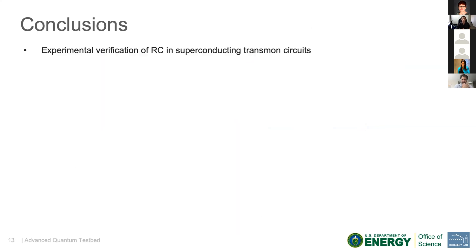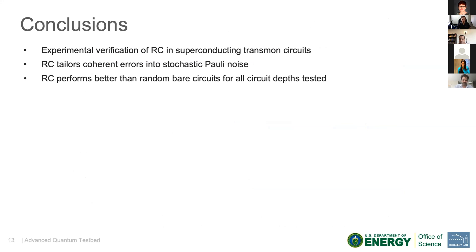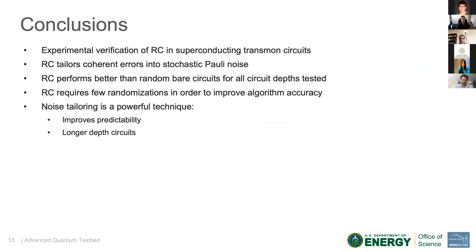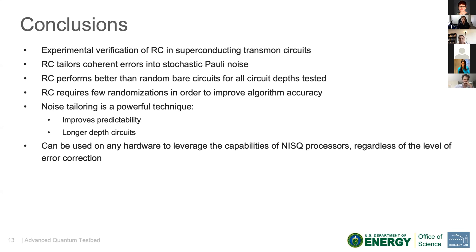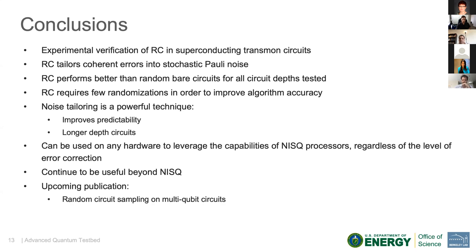In conclusion, we have shown experimentally the verification of randomized compiling in our superconducting transmon qubits. RC works by tailoring coherent errors into stochastic Pauli noise. It performed better than bare circuits for all circuit depths tested and requires few randomizations to improve algorithm accuracy. In general, noise tailoring is a really powerful technique because it improves circuit predictability and allows us to perform longer-depth circuits. Randomized compiling can be used on any hardware today regardless of the level of error correction being implemented, and I think it will continue to be useful beyond the NISQ era as well. We have an upcoming publication demonstrating random circuit sampling results on multi-qubit circuits and how RC can help improve known quantum algorithms. Thank you for your time.